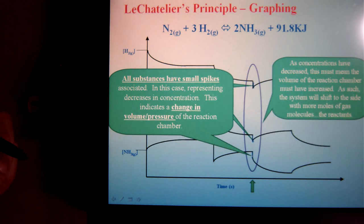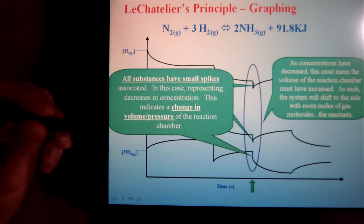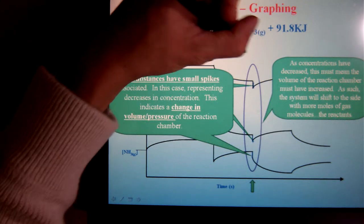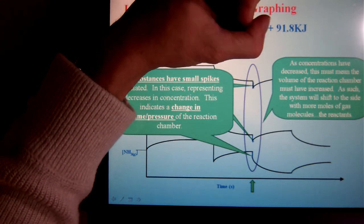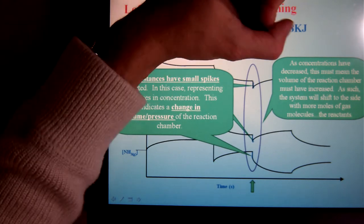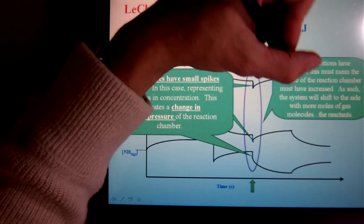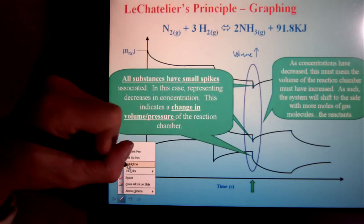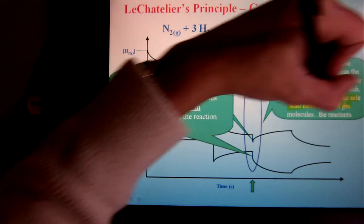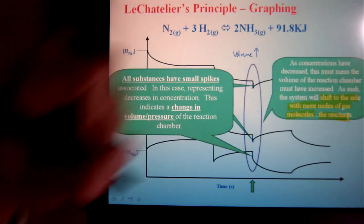And if I've increased the volume, that means I'm going to shift to the side with more moles. So I must have increased the volume in this example. Volume has gone up. Which means I'm going to shift to the side with more moles.